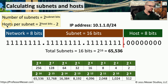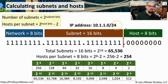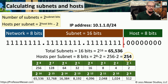The next calculation is hosts per subnet, which is 2 to the host-bits power minus 2. We have 8 host bits, so 2 to the 8th power minus 2 is 256 minus 2, or 254 hosts per subnet. So for this particular IP address, we know there is a maximum of 65,536 subnets we can create, and on each one of those subnets we can put a maximum of 254 hosts.